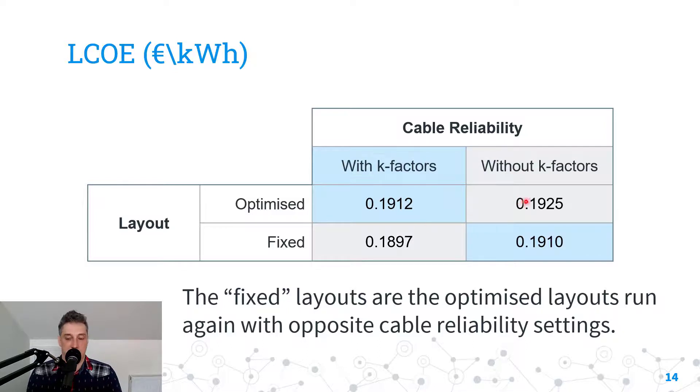But what was interesting is what happened when we swapped them over. We took the array layout without k-factors and ran it with k-factors, and in fact it got a lower value than the optimized array. Similarly happened when we did it with the array with k-factors and ran it without, again we got a better LCOE.